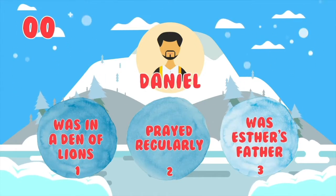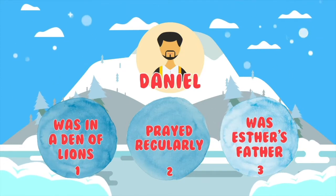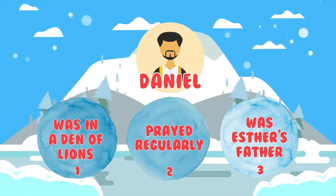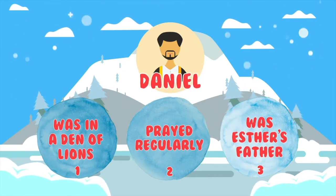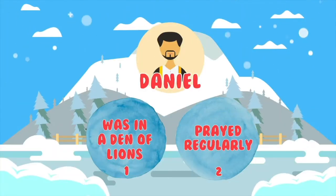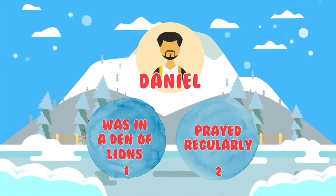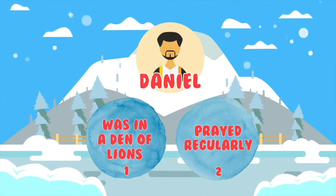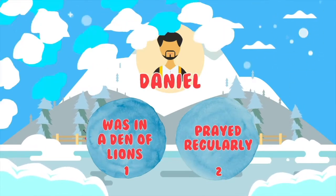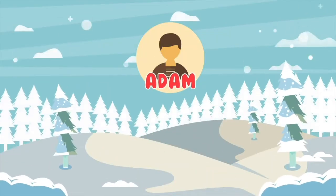Okay, time's up. Who's holding up three fingers? You're correct! Daniel was thrown into a den of lions because he did pray regularly, but he was not Esther's dad. Good job! Let's try another.